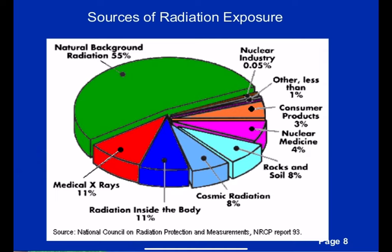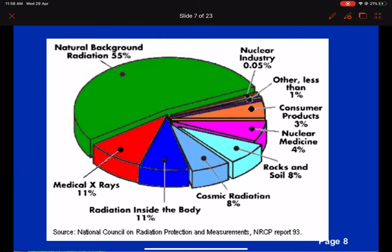Sources of radiation exposure include man-made and natural sources. Natural sources include terrestrial radiation — for example, thorium and radium — as well as cosmic radiation and radionuclides. Man-made radiation sources include medical x-rays, nuclear medicine, consumer products, nuclear power plant accidents, and nuclear fallout.